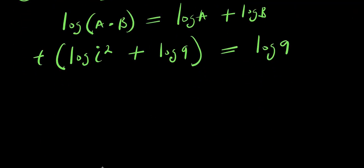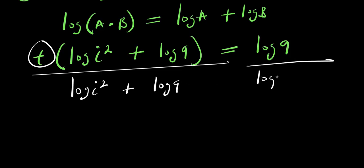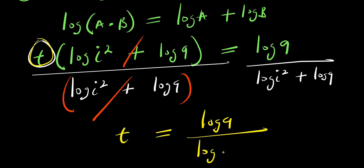From here we can isolate t, since that is what we are solving for. I divide both sides by log i squared plus log 9. This cancels on the left side, and what we are left with is t equals log 9 divided by log i squared plus log 9.